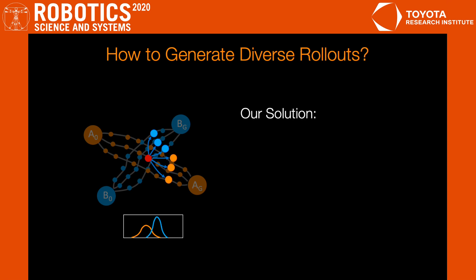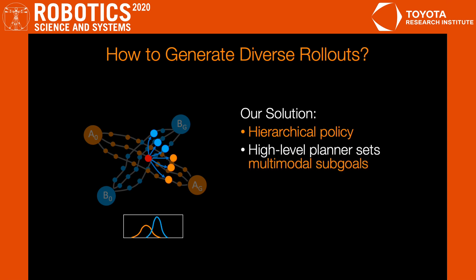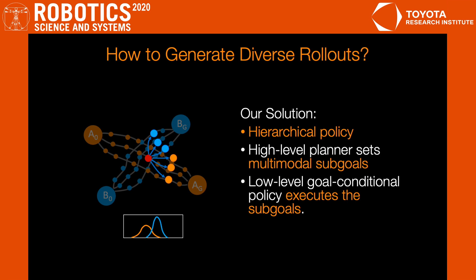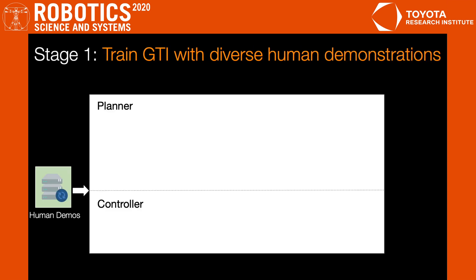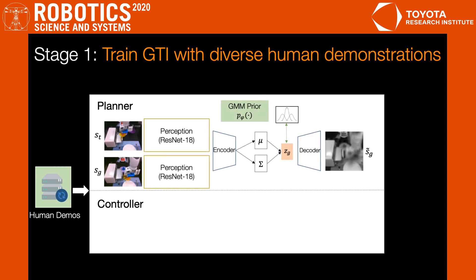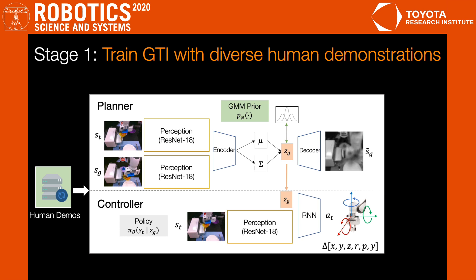Based on this observation, we design a hierarchical policy learning algorithm where the high-level planner captures the distribution of future observations in a multi-modal latent space, and the low-level policy conditions on the latent goal set by the planner to fully explore the space of demonstrations. In Stage 1, we train a conditional variational autoencoder that learns the distribution of future image observations conditioned on current image observations. The latent space is regularized with a Gaussian mixture model prior, encouraging a multi-modal distribution of future image observations. The low-level controller conditions on these multi-modal latent sub-goals and is trained to imitate the demonstrations.